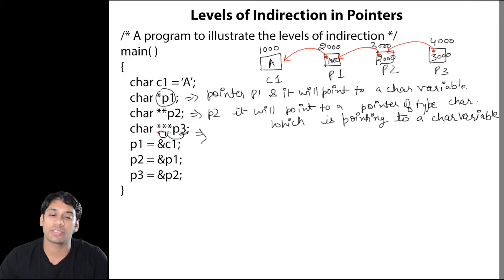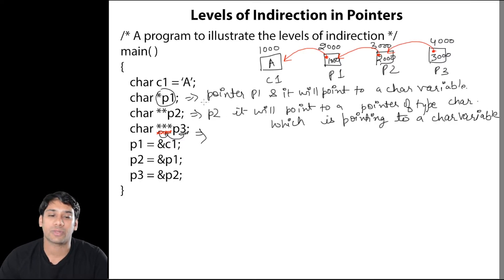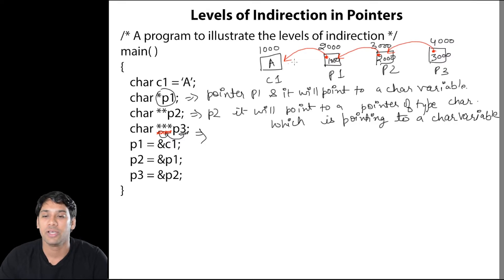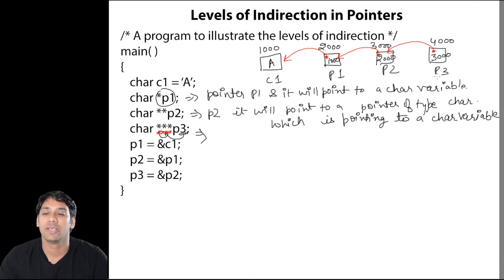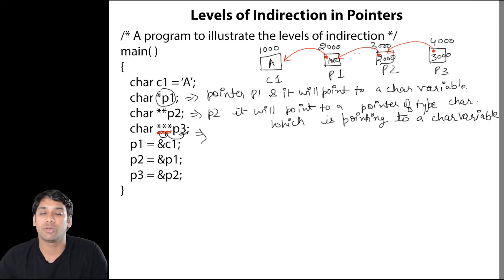If you use multiple stars — for example, one star, two star, three star — they show the levels of indirection. In the case of P1, there is only one level of indirection, meaning P1 is pointing to character variable C1. For P2, there are two levels of indirection — P2 is pointing to P1 and P1 is again pointing to C1. For P3, there are three levels of indirection — P3 is pointing to P2, P2 is pointing to P1, and P1 is pointing to C1. In this way you can have multiple levels of indirection.